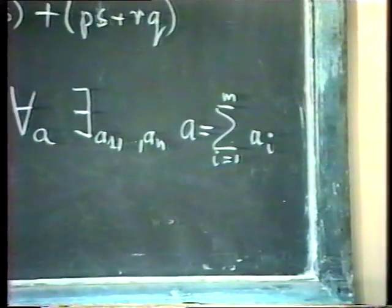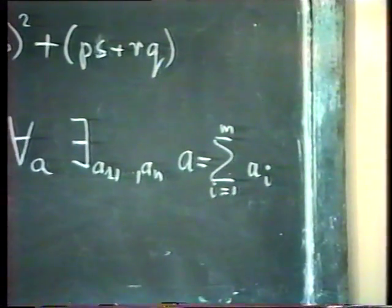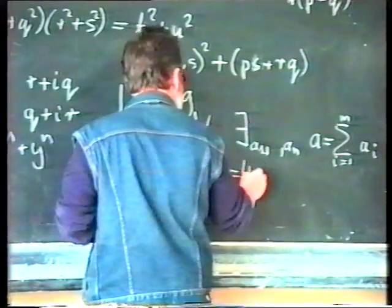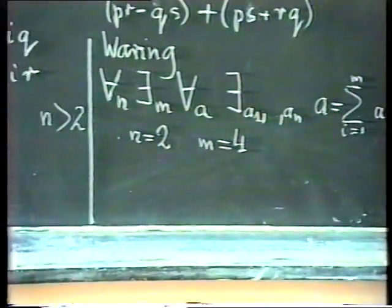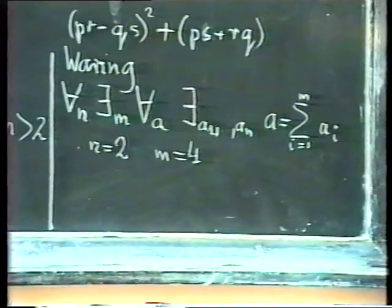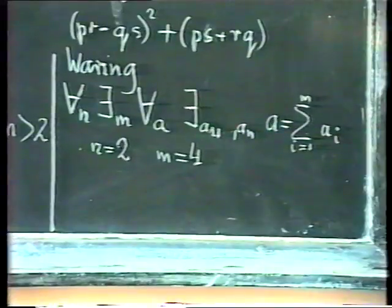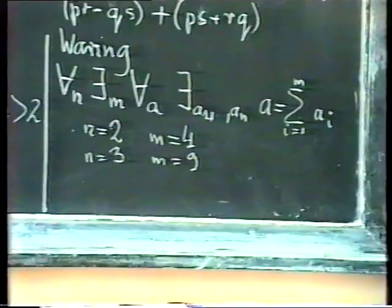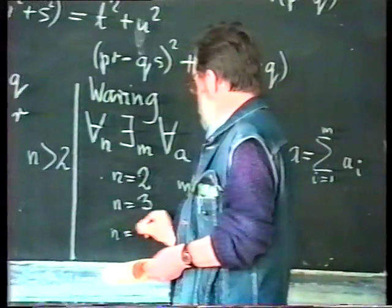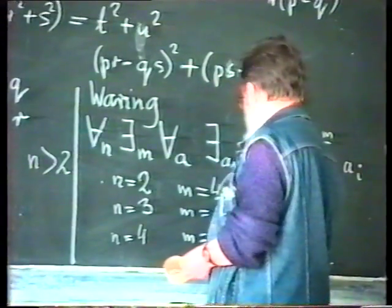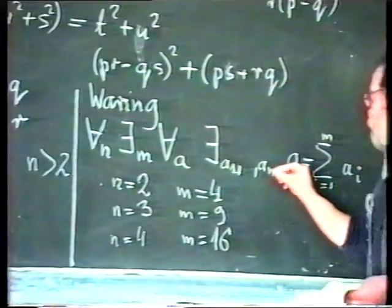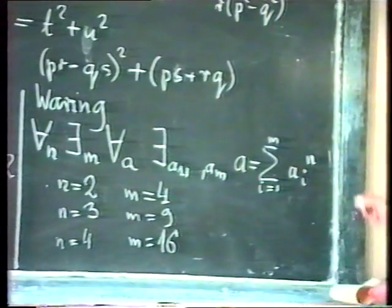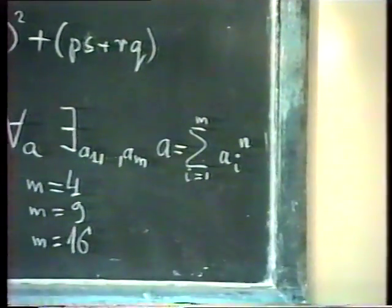Najpierw zaczęły być podawane przykłady, że czasami tak jest. Na przykład dla n równego 2, m równa się 4. To jest wynik Lagrange'a. I ten wynik poniekąd właśnie spowodował, że Waring był zdania, że to zawsze da się tak zrobić. Dla n równego 3, m równa się 9. Dla n równego 4, m równa się 16. Przepraszam bardzo. Ojej, ojej, oczywiście. Tak, tak, rzeczywiście, były błędy, teraz już chyba jest dobrze. Tak powinno być. Rzeczywiście.